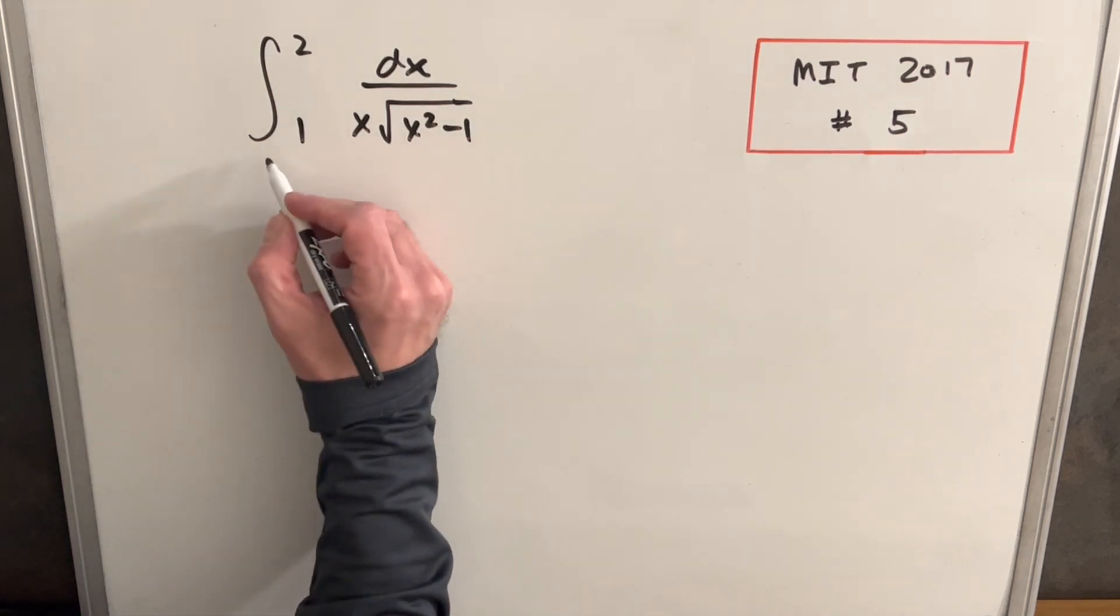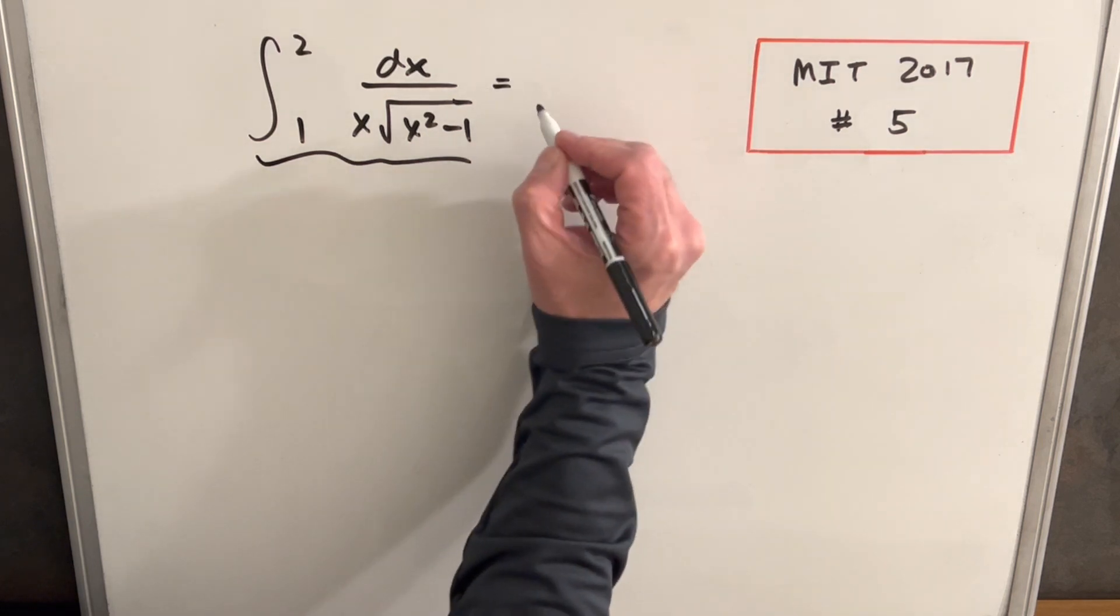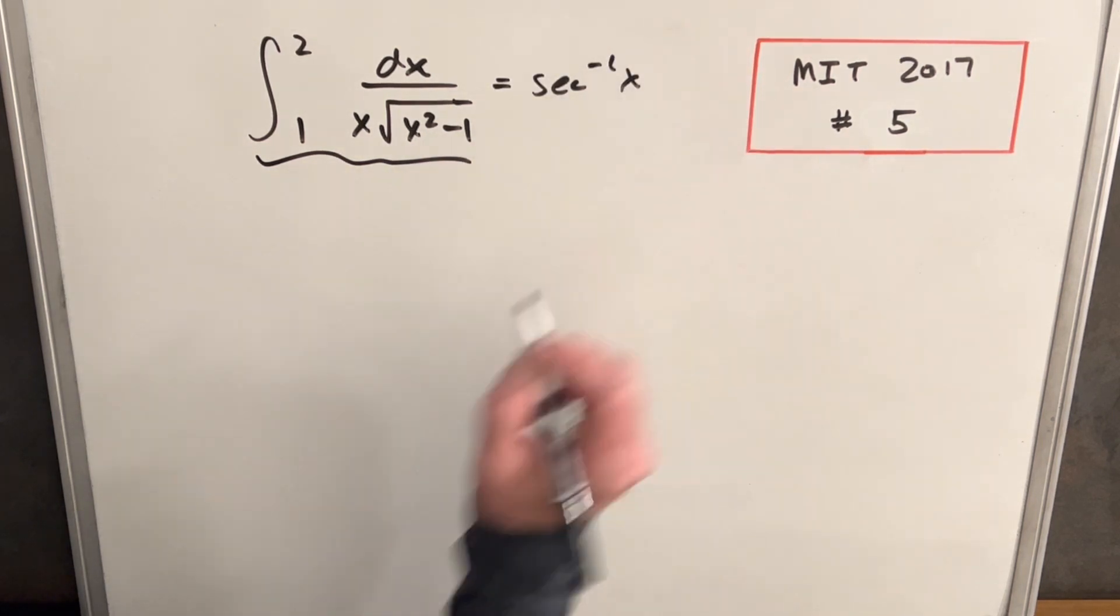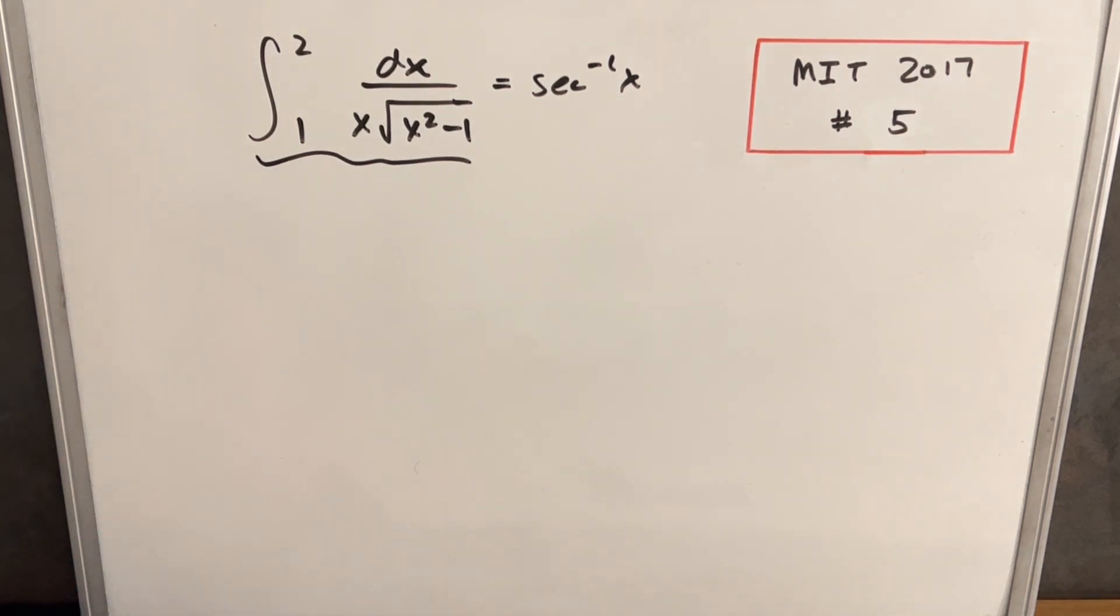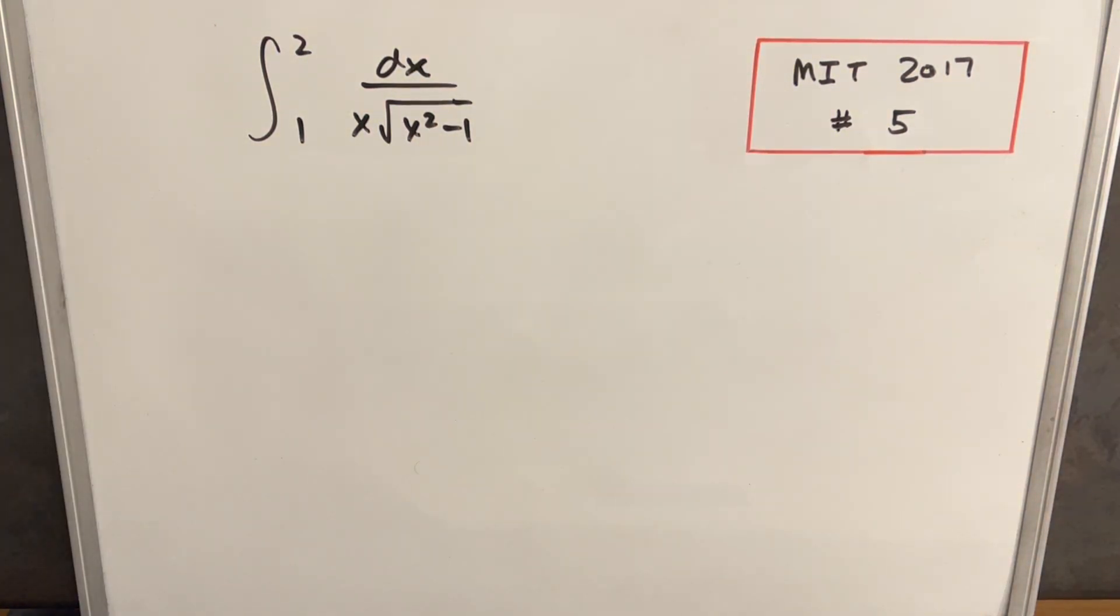Now one thing to notice is this integral, we could go right to an answer, and this is actually secant inverse of x, and then we could evaluate that from two to one. If I want to do this with a different method, that's going to be a little bit too easy, so let's try to make this a little harder for ourselves. So as an alternative, I'm going to avoid the secant inverse, and we'll avoid trig sub, and we'll just work with the algebra first.